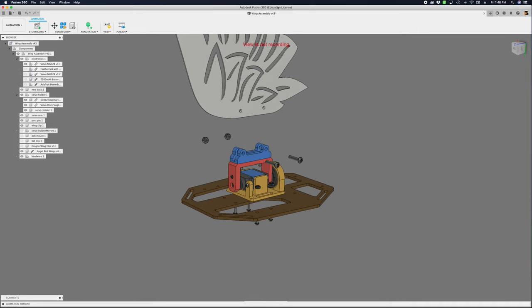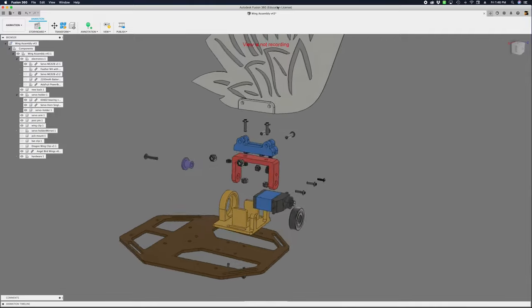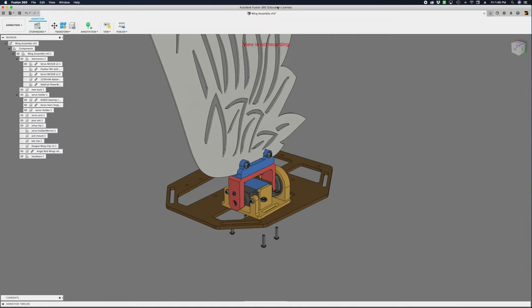We designed the CAD in Fusion 360 and modeled parts for the parametric and adjustable. Our layer-by-layer tutorial walks through the design and how the parts work together. The 3D printed parts are designed to print without any support material.